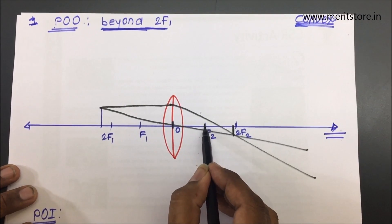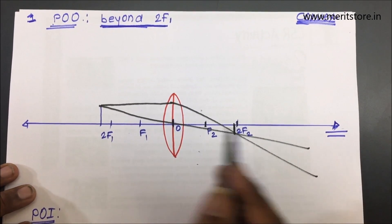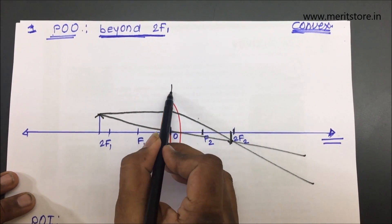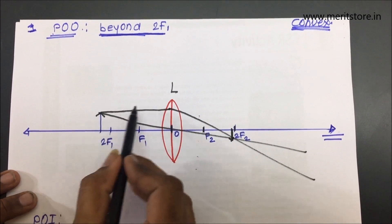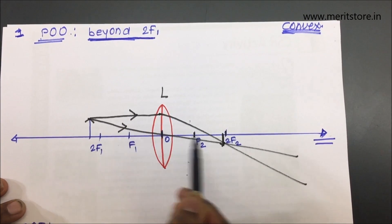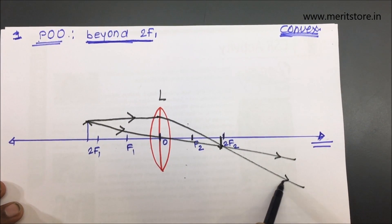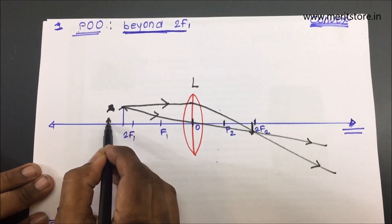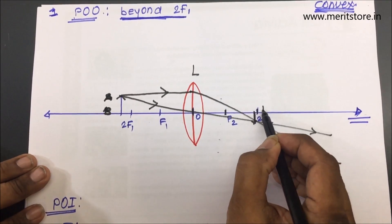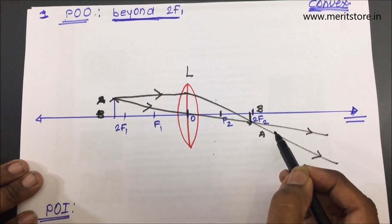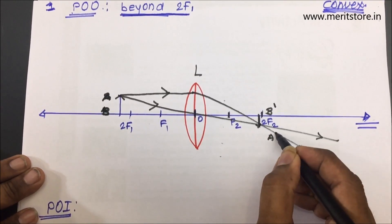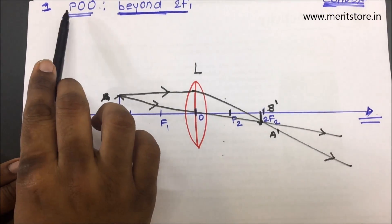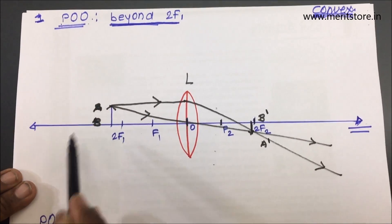When you draw these two rays, they meet between f2 and 2f2. Complete the diagram by putting arrows on the rays to show the direction of light, and label the lens. Call the object AB and the image B'A' (or A'B').